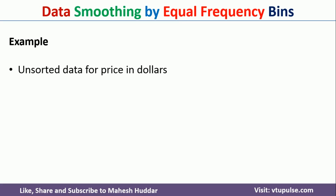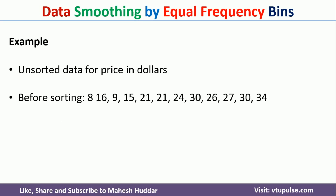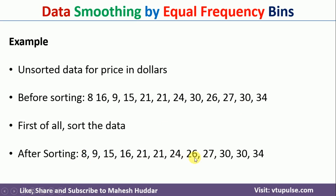Let us say that we have been given a data. The given data may be sorted or it may not be sorted. If the data is already in a sorted manner, then there is no need to sort it in ascending order. But if the data is unsorted, then we need to sort that particular data in ascending order. In this case, if you notice the given data, the data is unsorted. So we need to sort the data in ascending order. Once you sort the data in ascending order, we will get the sorted data, and then we can apply the different data smoothing techniques.